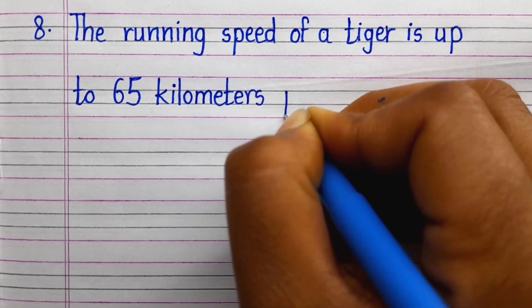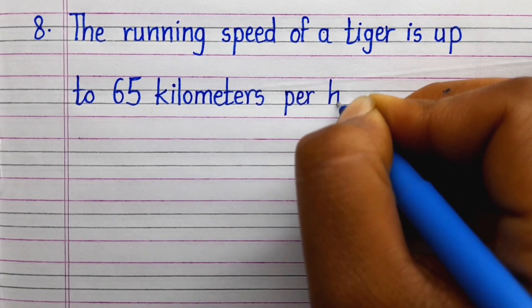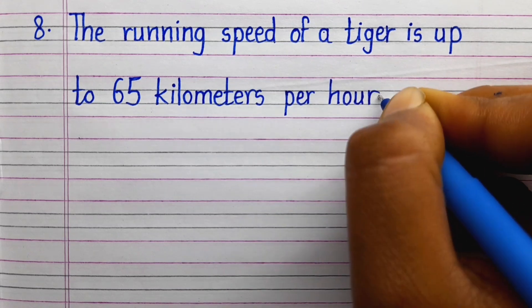Eighth line: The running speed of a tiger is up to 65 kilometers per hour.